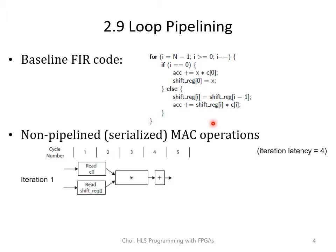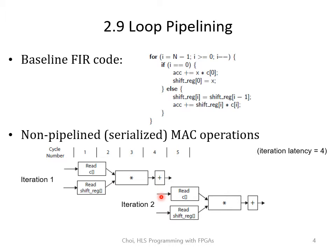Given our baseline FIR code, one simple way of executing this for loop is to first finish executing the first iteration — read C, read the shift register, multiply and add — and wait for it to finish. Then we can start the second iteration, multiply and add, and so on. Assuming the iteration latency is 4, the execution cycle of the for loop would be 4 times 11 iterations, so 44 cycles.